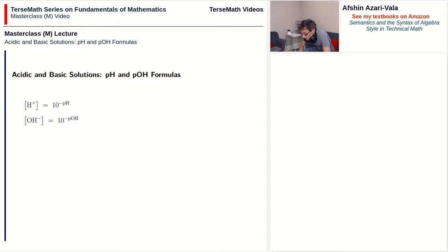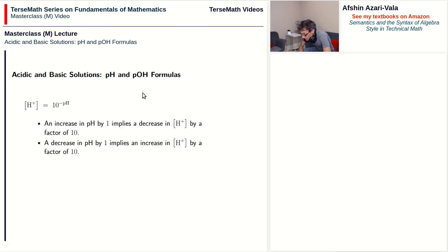These are two formulas we use very commonly when working with acidic and basic solutions. The two formulas are nearly identical — the only difference is that the substance changed from H+ to OH-, and the exponent changed from pH to pOH. If you know how to work with one, you can take the same steps with the other. Most importantly, keep in mind that in physical and biological systems, what we ultimately care about is the concentration of H+ ions, and pH is a quick way to tell us about that concentration.